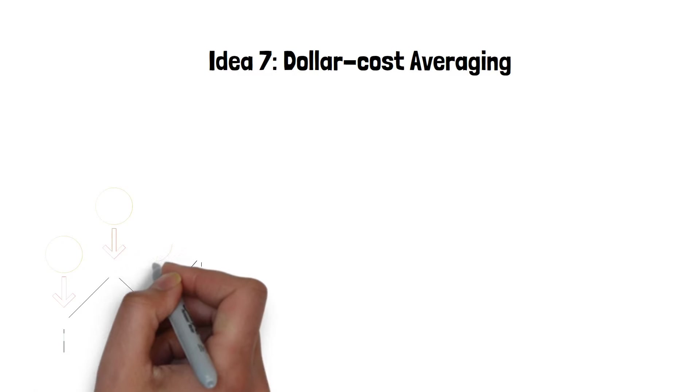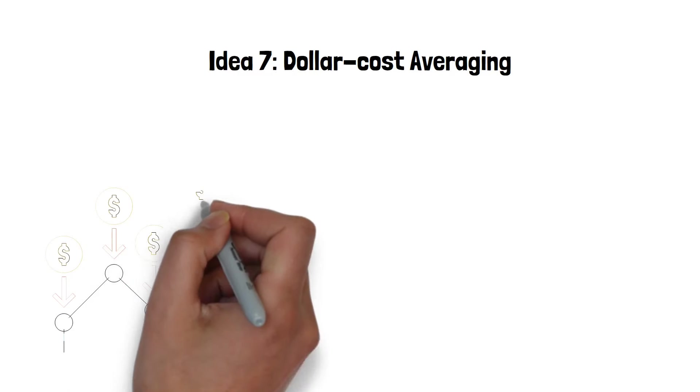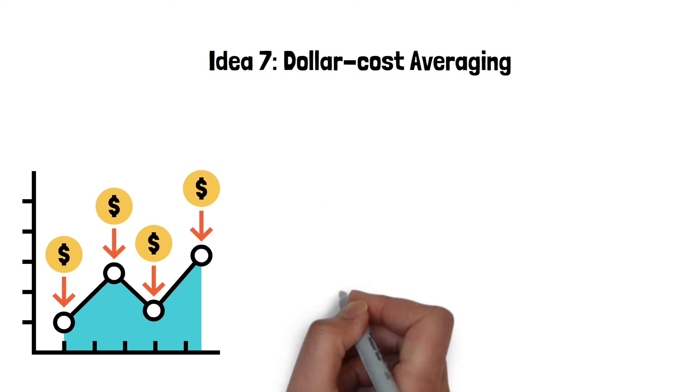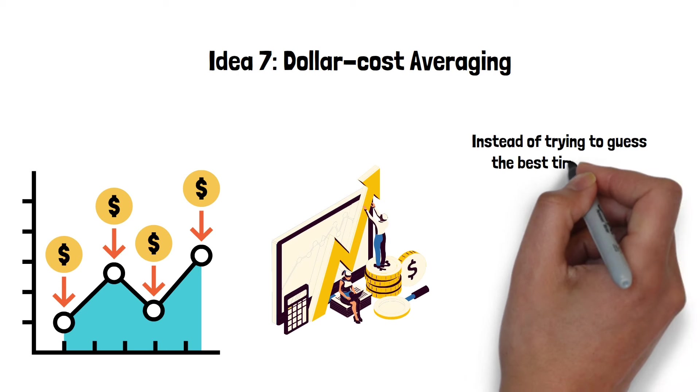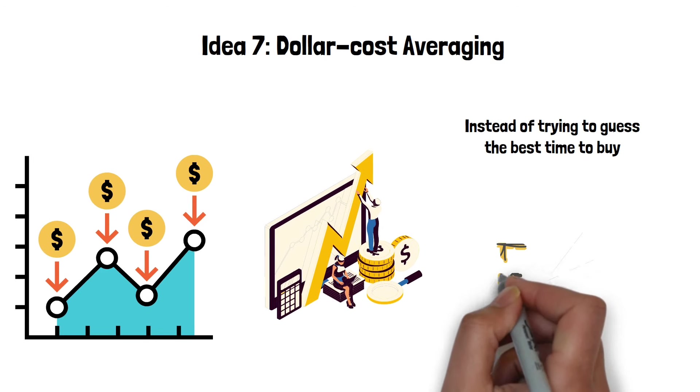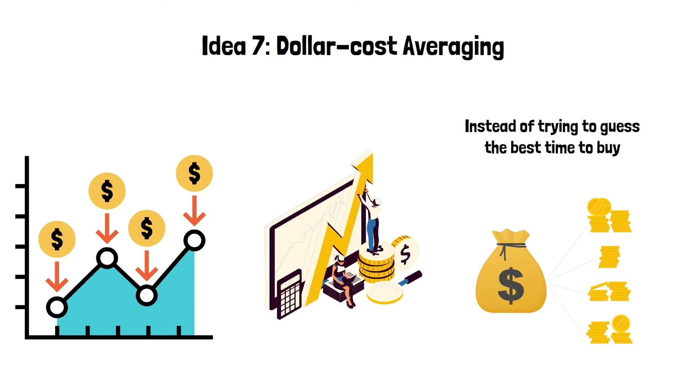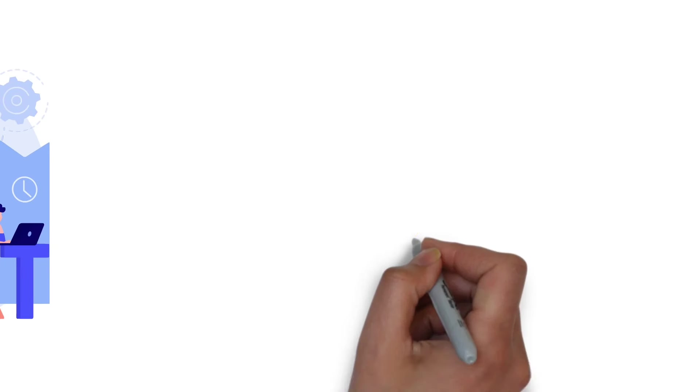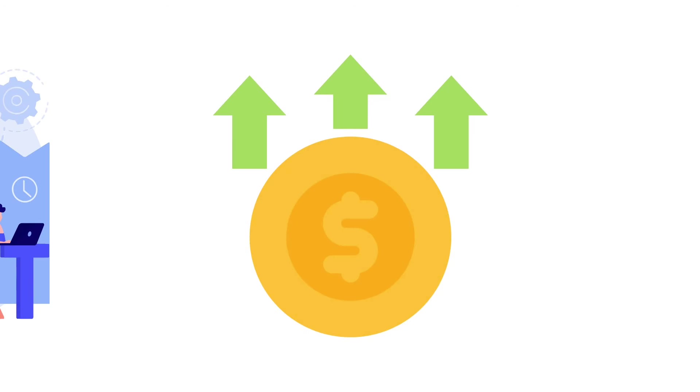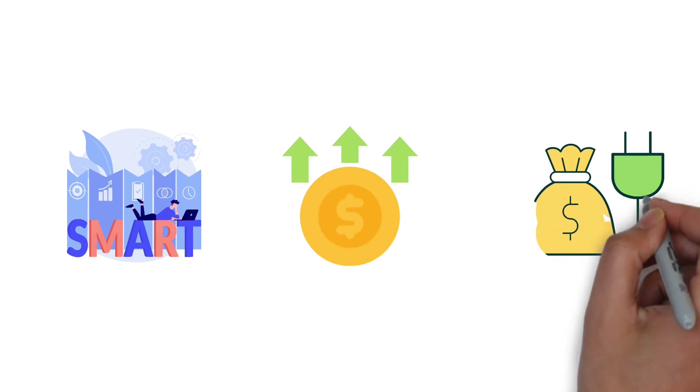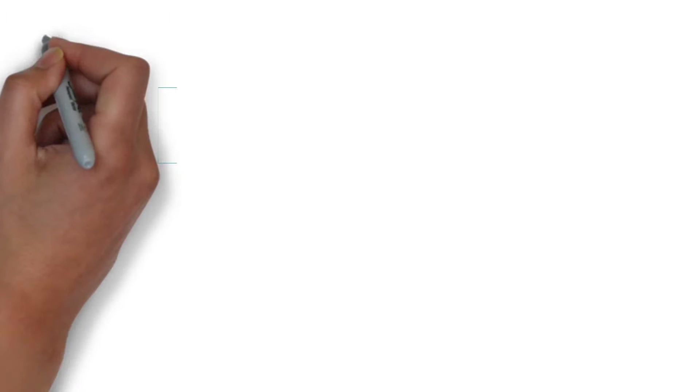Idea 7: Dollar cost averaging. Dollar cost averaging is a strategy that involves regularly putting the same amount of money into investments, regardless of how the market is performing. Instead of trying to guess the best time to buy, you'd split that money into smaller portions and invest those portions at set intervals. Here's why this can be a smart move. When prices are high, your money buys fewer shares. But when prices are low, you get more shares for the same amount of money. Over time, this can mean you pay less on average per share, which could work out better than if you try to time the market perfectly, which is really hard to do.